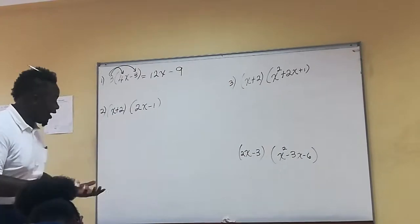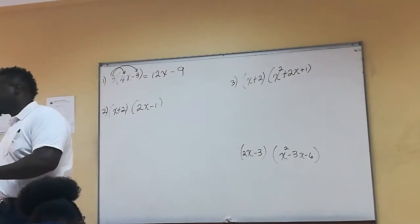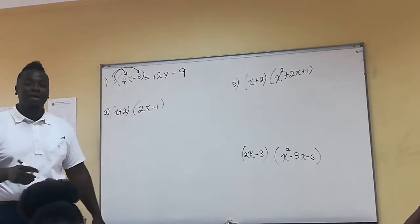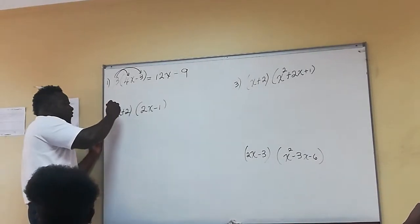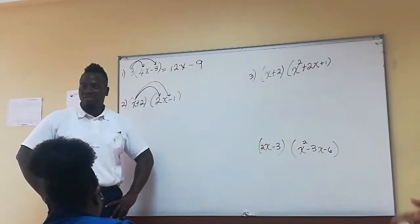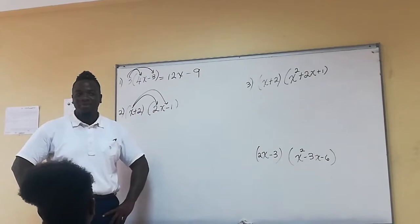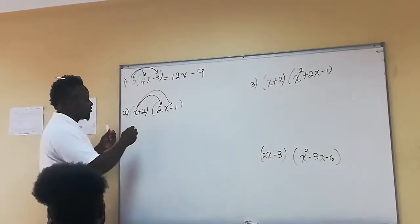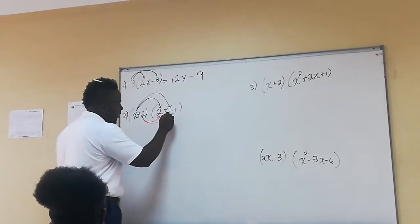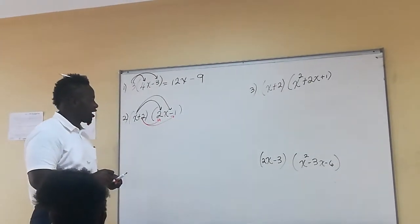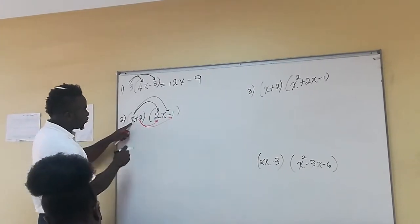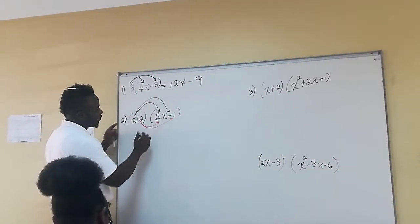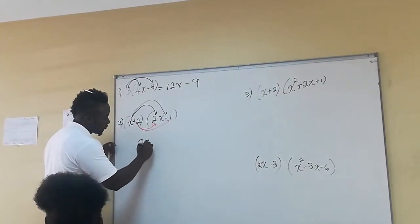Now we're going to look at our binomial times a binomial. When we're multiplying a binomial by a binomial, we multiply the first element of the first bracket by all the elements in the second bracket. After which, we multiply the second element by each element in the second bracket. So we're going to say two x times two x, and we're going to get two x squared.